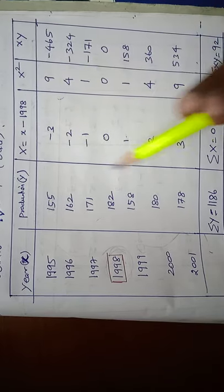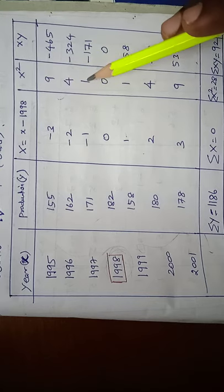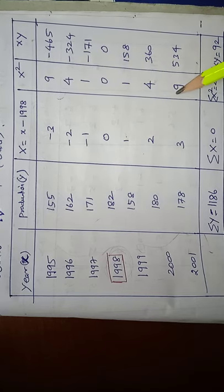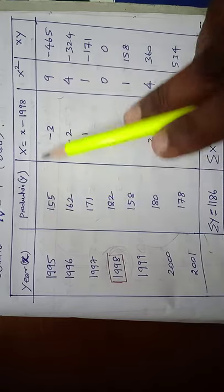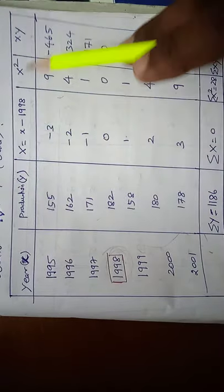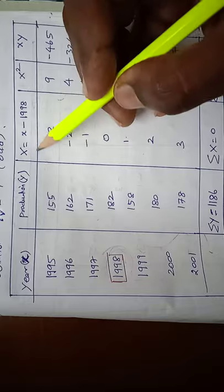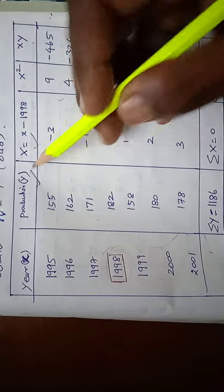Again, we have to compute X square, squaring all the values: 9, 4, 1, 0, 1, 4, 9. Last column, multiply X and Y, capital X and Y. It is not small x, capital X and Y. We have to multiply these two things.